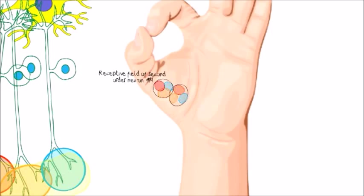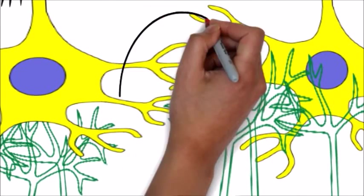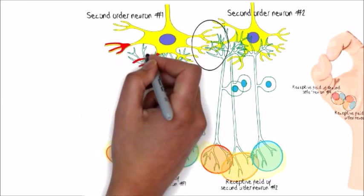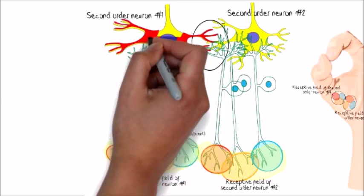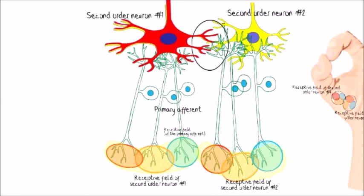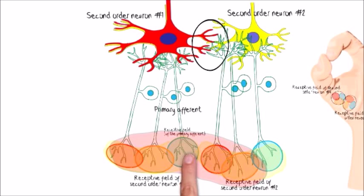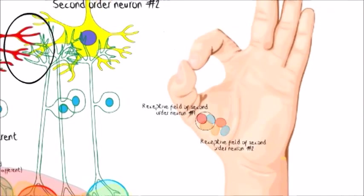However, afferents always branch and send collaterals to other neurons on which they normally have little influence because of the locations of their synaptic boutons. When the second-order neuron becomes sensitized, these distal influences now have more effect and effectively expand the receptive field of that second-order neuron.